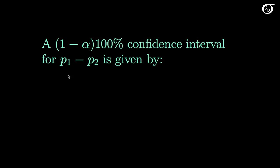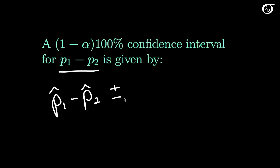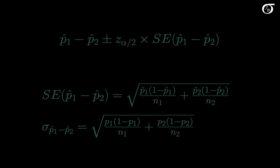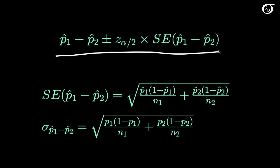For a confidence interval for this difference in population proportions, we start with our best guess — the difference in sample proportions — and then add and subtract the margin of error. For proportions that involves a z value, z sub alpha over 2, times the standard error of the difference in sample proportions. The confidence interval is written out more formally on the next slide, and our main challenge is computing the standard error, which is the messiest thing to calculate.